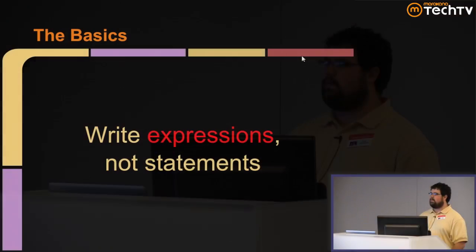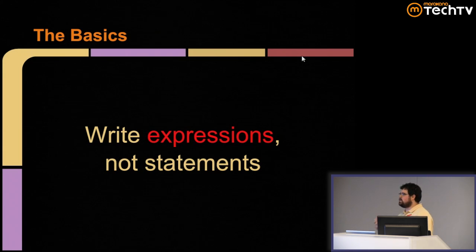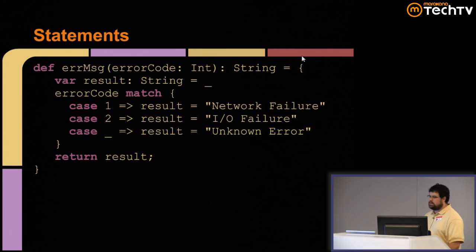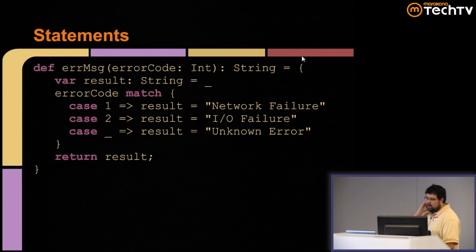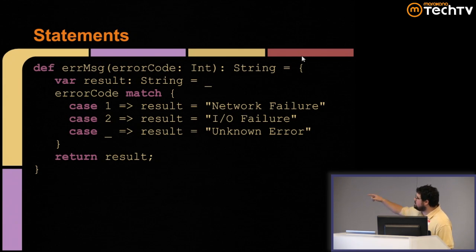First off, in Scala, this is the most basic principle: expressions, not statements. Everything in Scala is an expression — everything returns a value, and you can make use of this. Here's some imperative code: I want to get an error message for a given error code. I create a var result, match over my error code, assign to the result, and at the end return it. What does that look like? Java.